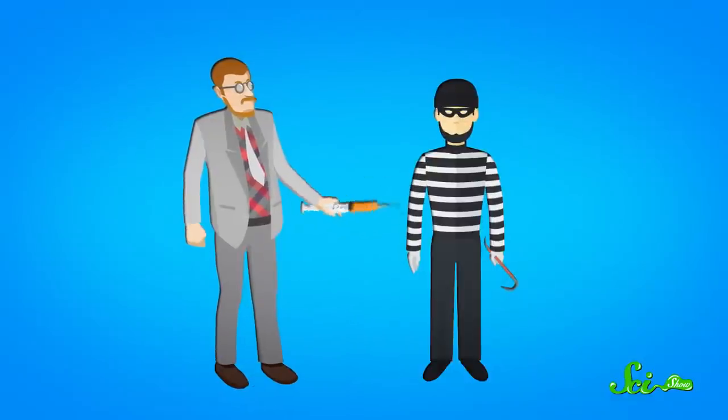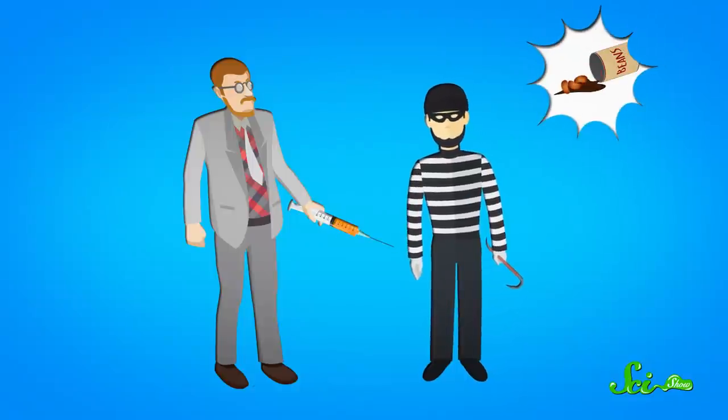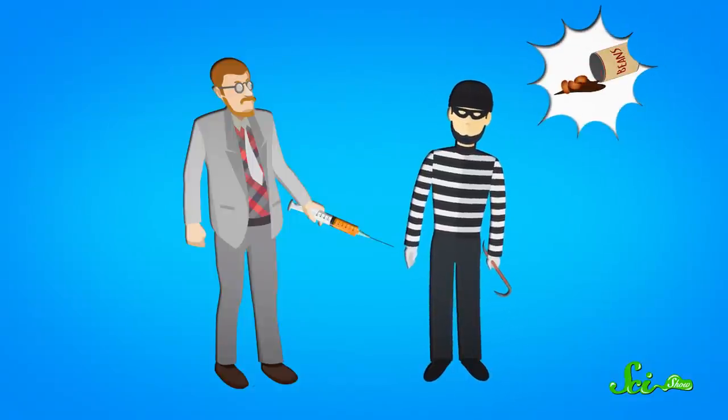You've probably seen it on TV or in a movie. A suspect is being interrogated about some crime, and everybody knows he did it, but he won't confess. So an old man in glasses and a lab coat comes in with a syringe full of bright orange stuff, and he pokes it in there, and the guy starts spilling the beans on everything, from the crime all the way to that weird dream he had about his mom in high school.